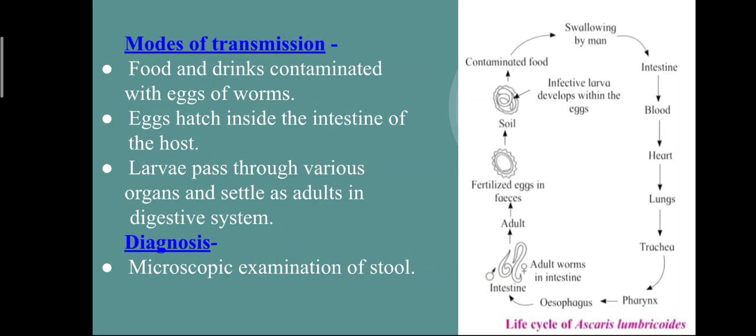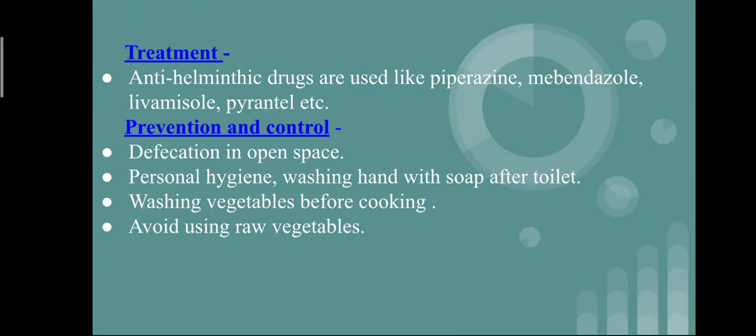The larvae of Ascaris goes on a 10-day tour of the body, visiting the intestine, blood, heart, lungs, trachea, pharynx, and esophagus, before reaching adult form and living in the intestine. Fertilization again takes place in the intestine and eggs are passed out through fecal matter, causing re-infection through food and water. Diagnosis is also by microscopic examination of stool. Treatment uses anti-helminthic drugs like piperazine, mebendazole, levamisole, and pyrantel.